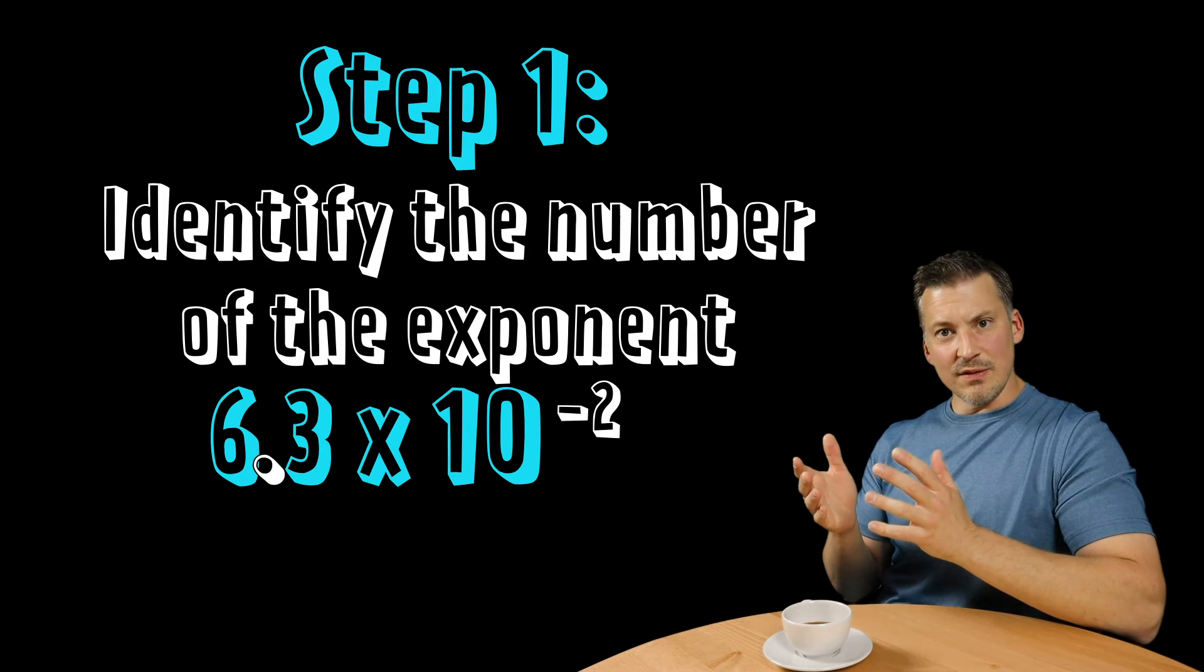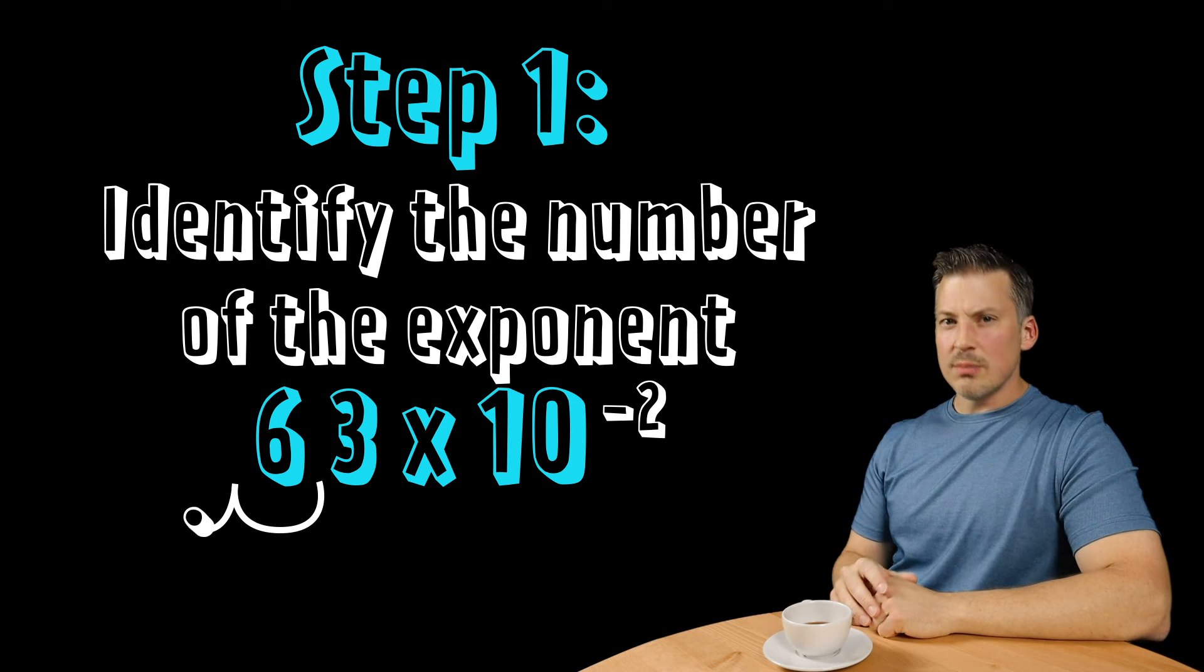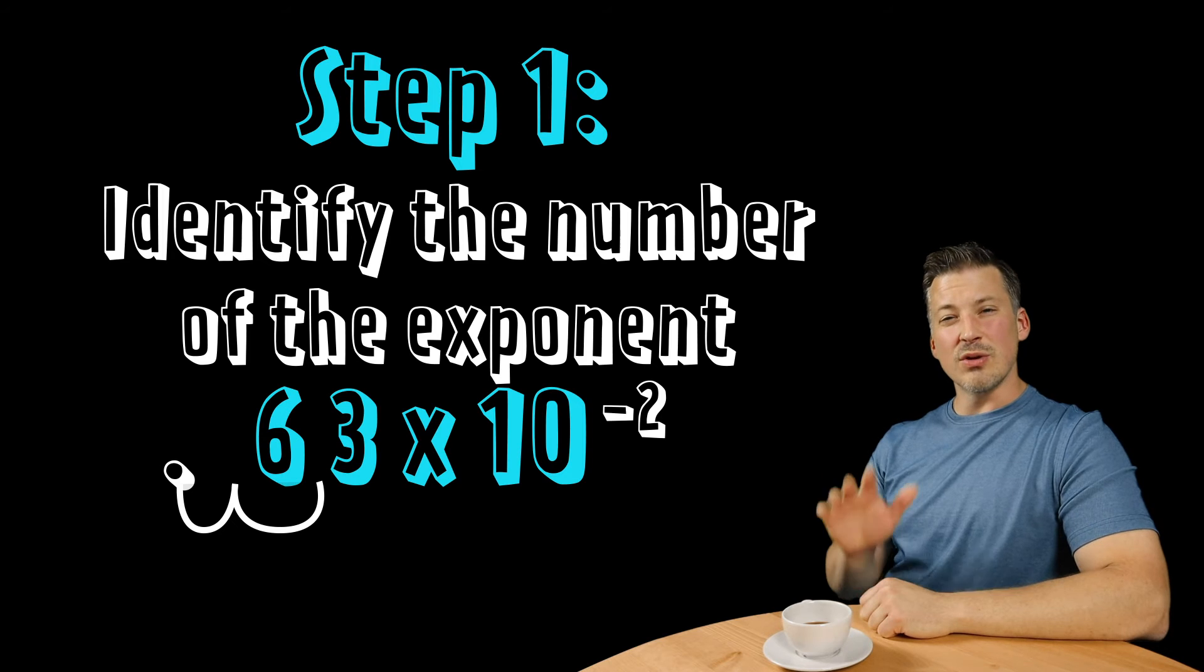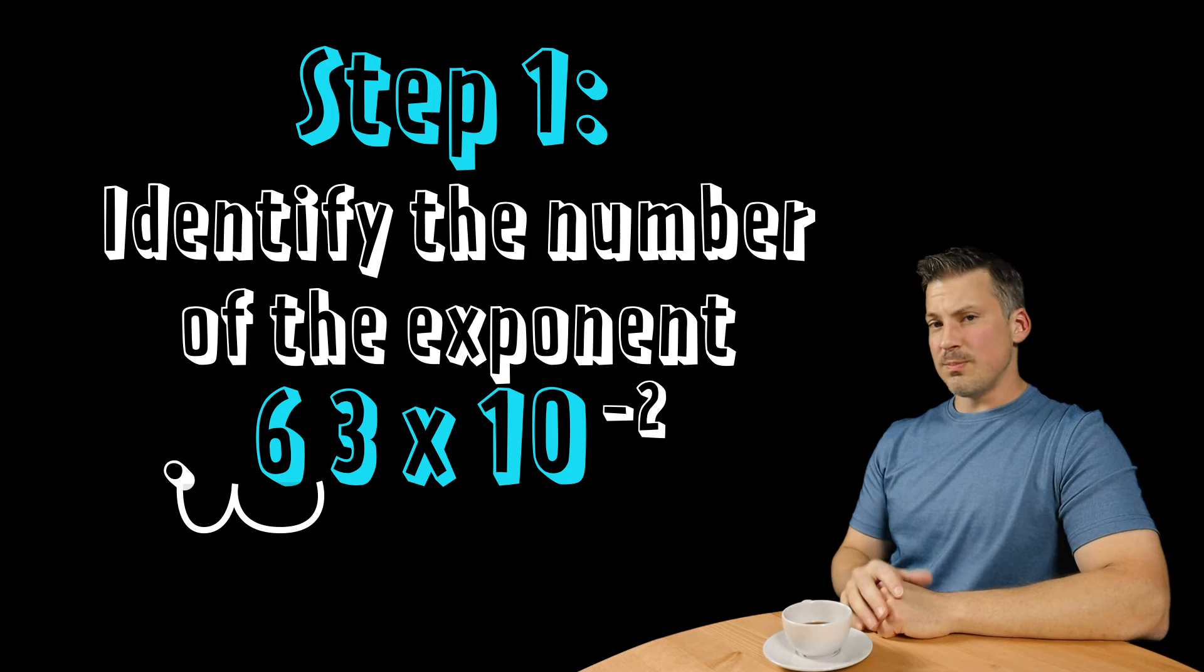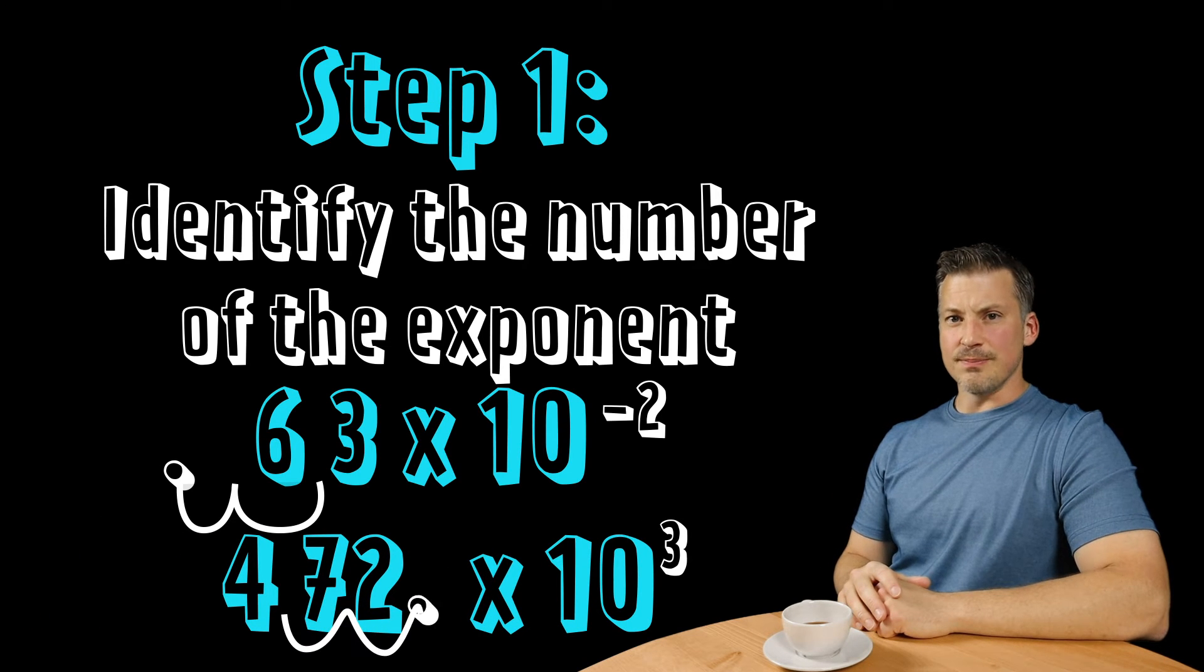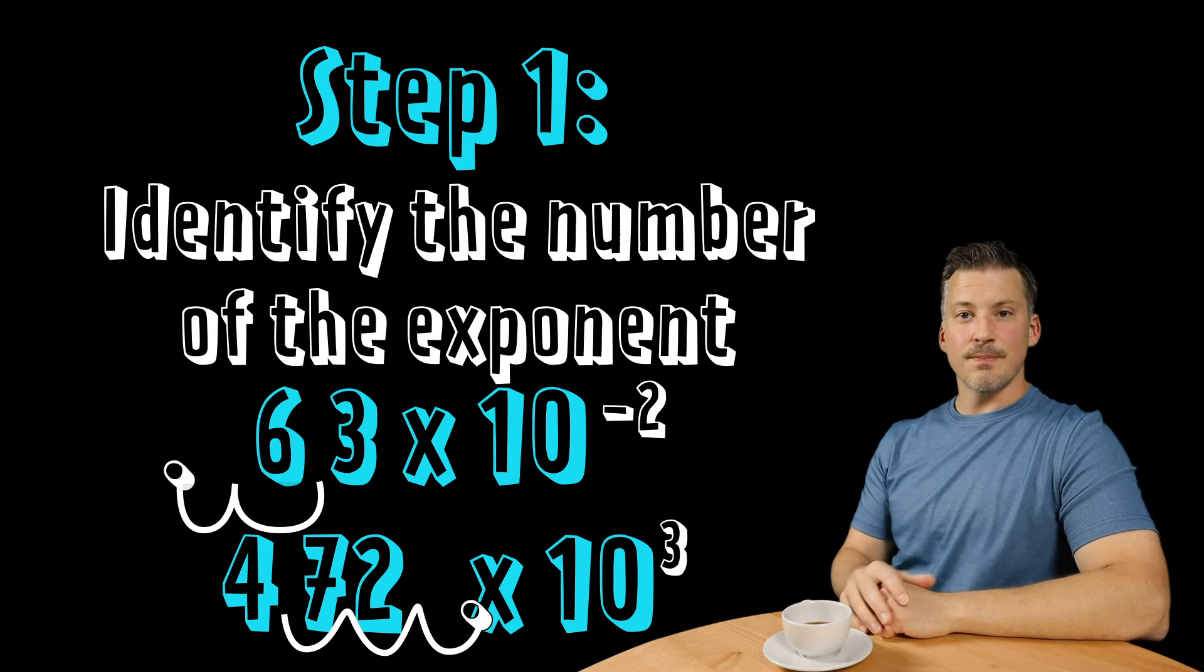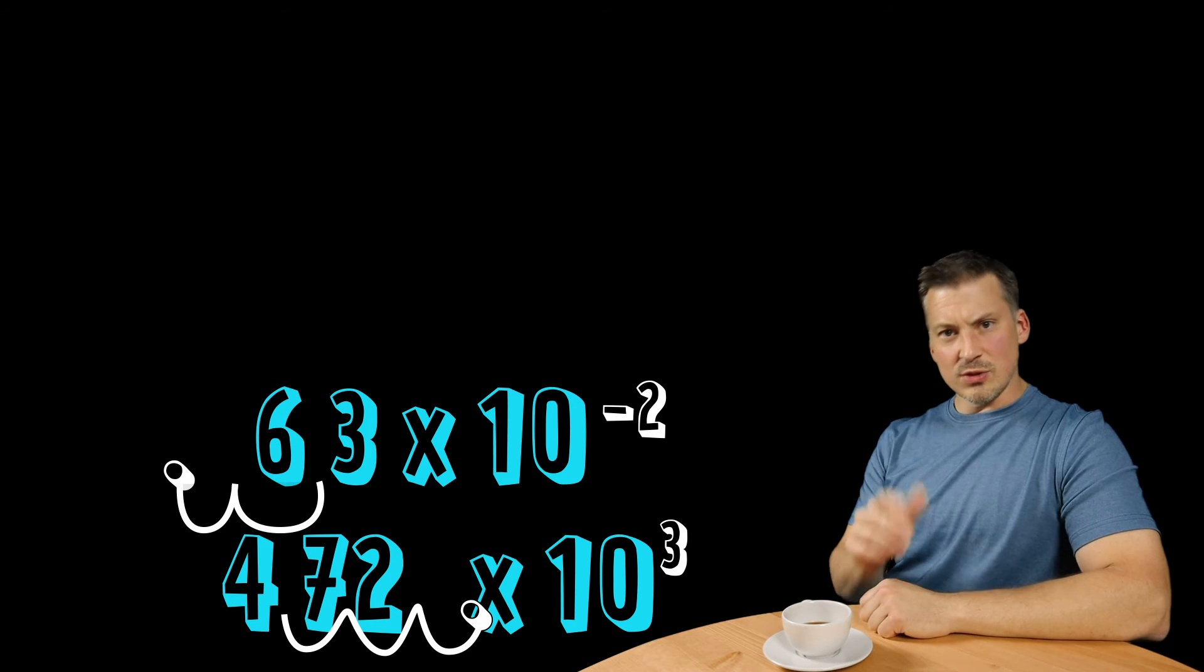If the number is negative, that's going to tell you the number of bunny hops you have to make to move the decimal to the left. If the exponent is positive, it's going to be the exact opposite - it tells you the number of bunny hops you have to make to the right.